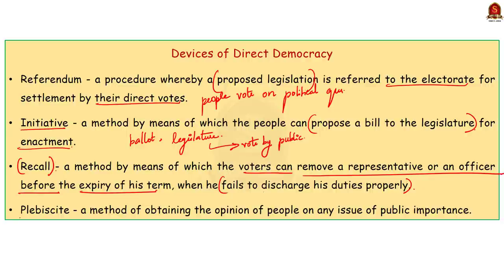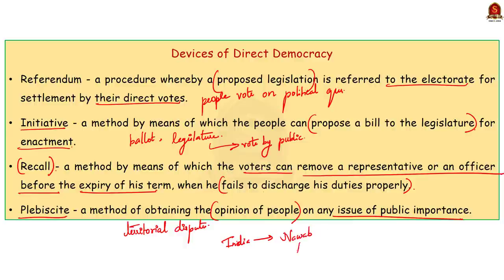The third device is recall. It is a method by which voters can remove a representative or officer before the expiry of his term when he fails to discharge his duties properly. It is based on the principle that officeholders are agents of the popular will and should be constantly subject to its control. The final device is plebiscite — a method of obtaining the opinion of people on any issue of public importance, generally used to solve territorial disputes. For example, after the partition of India and Pakistan in 1947, a plebiscite was held on 24th February 1948 in Junagadh. 99% of its predominantly Hindu population voted to join India, and that is how Junagadh became part of India.